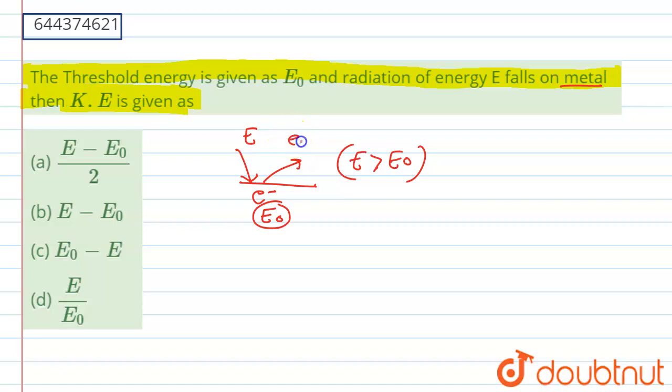So when this electron comes out, this electron will have a kinetic energy. So Einstein gave an equation, this is called Einstein photoelectric effect equation, which is given as the total energy which is falling on the metal surface is equal to the threshold energy plus its kinetic energy. And this threshold energy E₀ is also called as a work function.